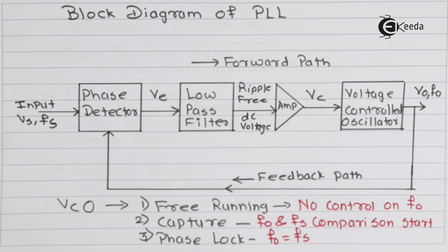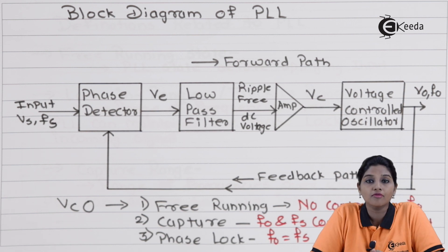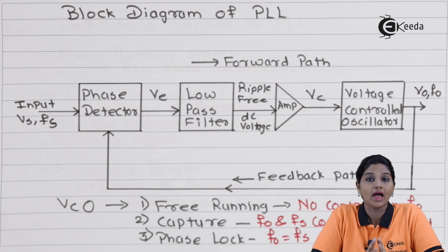The third stage of operation of VCO is the phase lock state. At this stage, the VCO provides FO equal to FS and the PLL enters into the phase lock loop. Once the PLL enters the phase lock loop, the output frequency changes with respect to the input frequency — that means the output frequency tracks the input frequency. This indicates the output frequency changes with variation in input frequency, and this is how the phase relation between input and output is obtained using PLL.